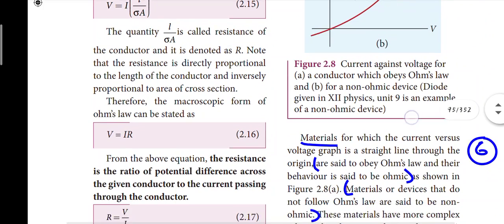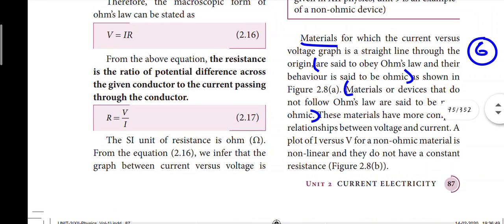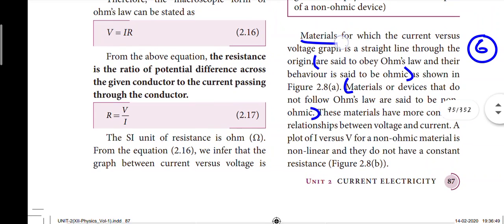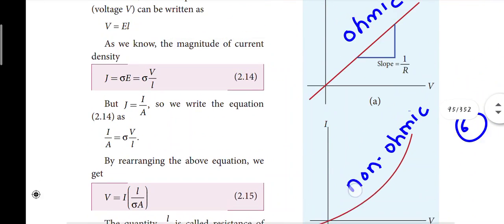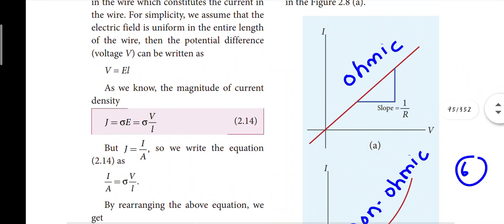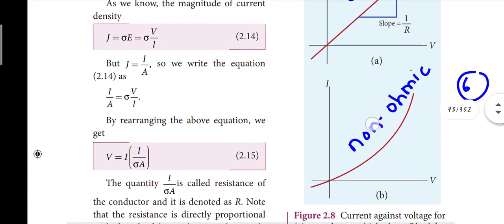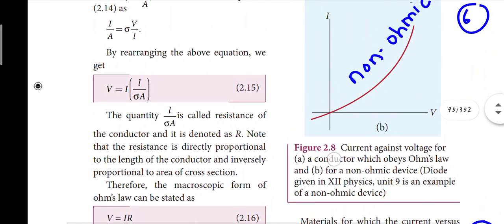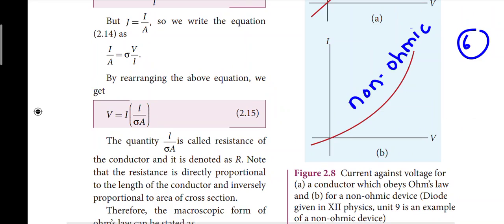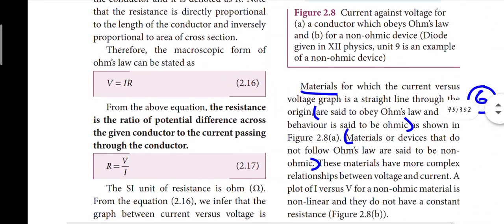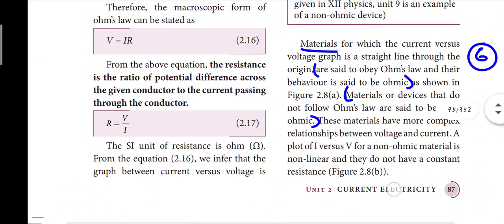Page 87: ohmic devices and non-ohmic devices. The materials that obey Ohm's law are called ohmic devices. The materials which do not obey Ohm's law are called non-ohmic devices. This is Question 6, page 87.